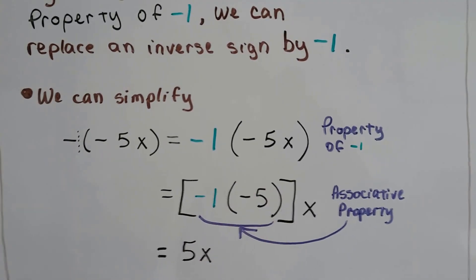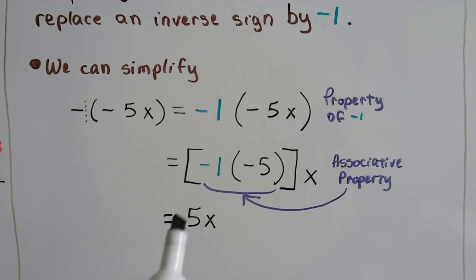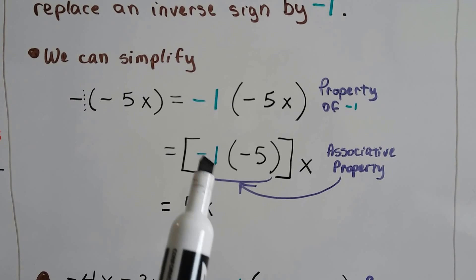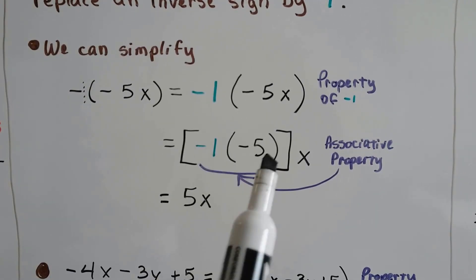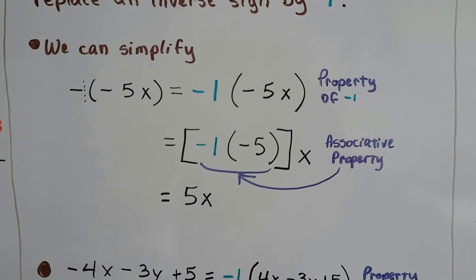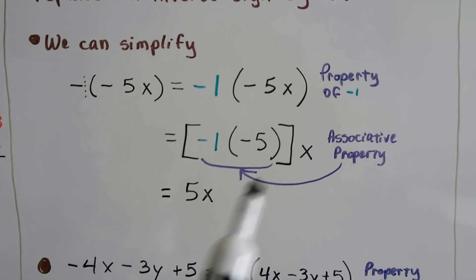So it'd be negative 1 times negative 5x. That's the property of negative 1. And using the associative property, we can put the two numbers together and put the variable out here. And negative 1 times negative 5 is positive 5 times x.